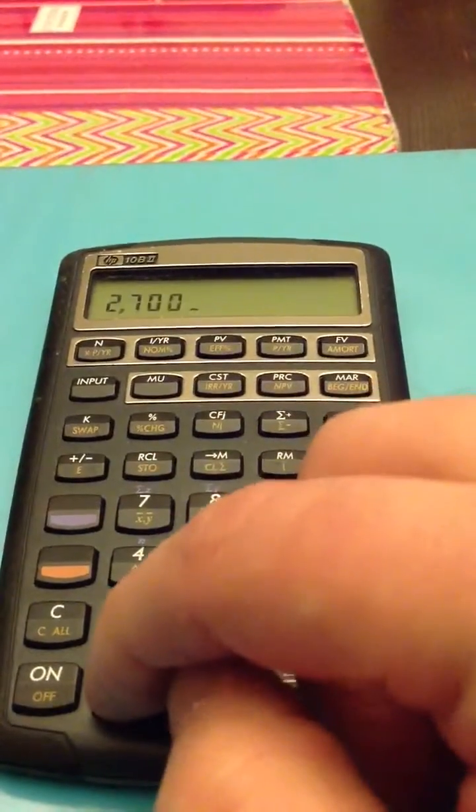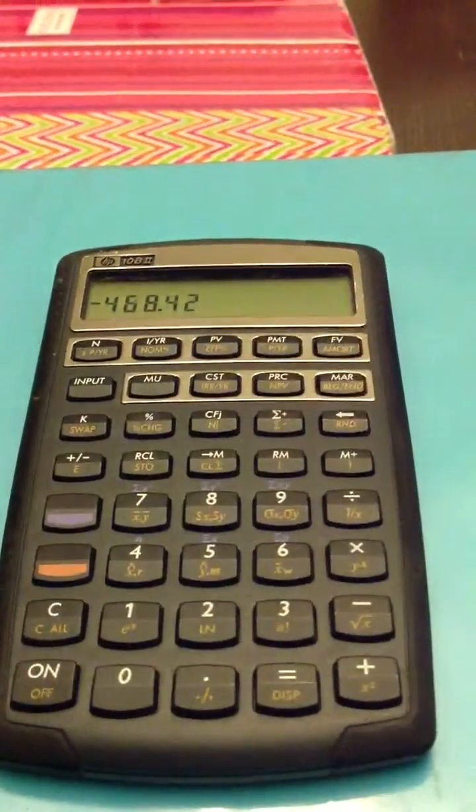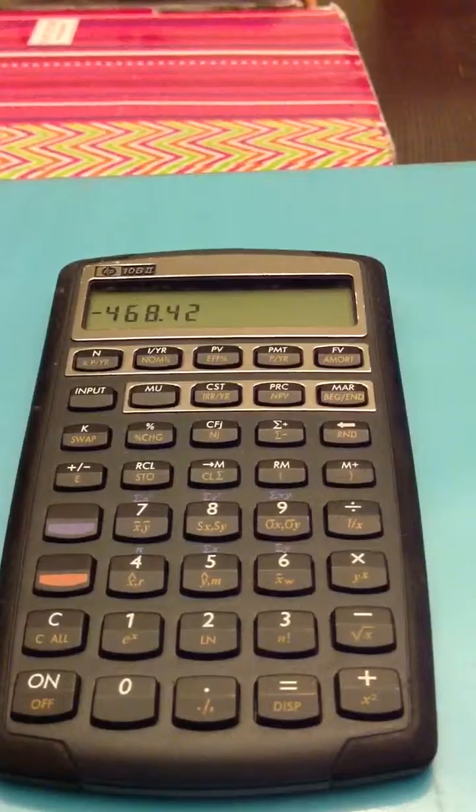The value of the car, $27,000. Future value is zero, and your payment comes up to be $468.42. Same payment,